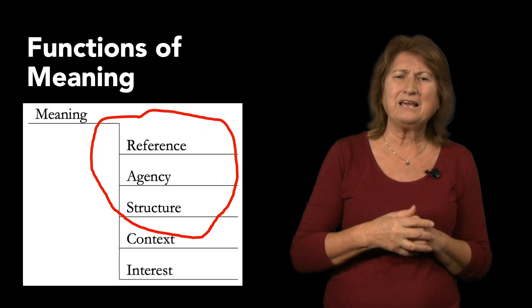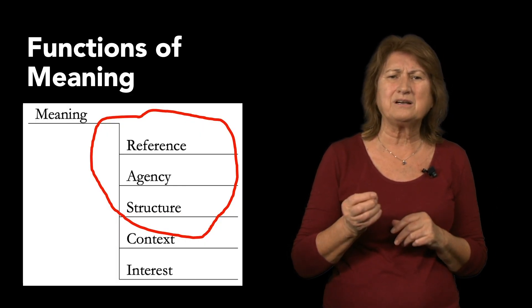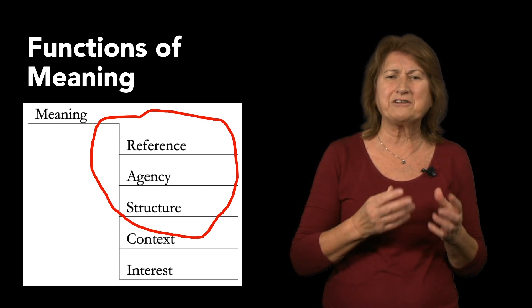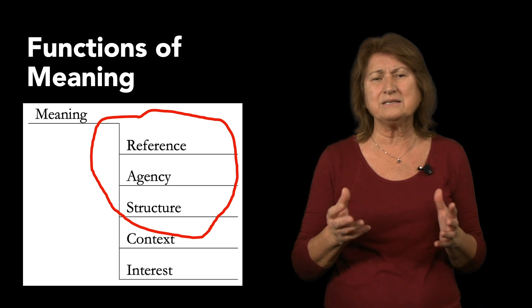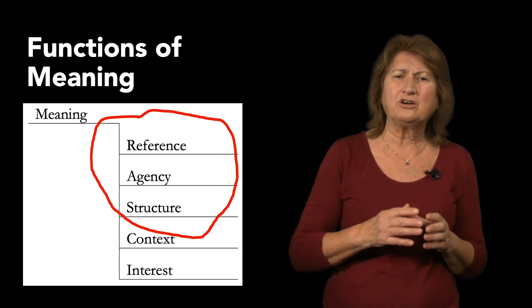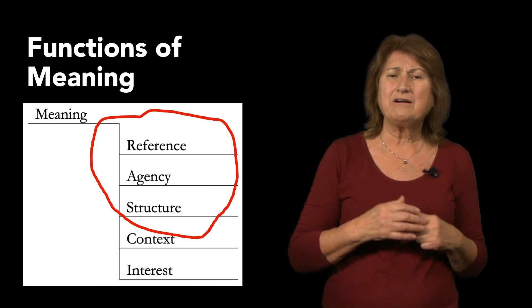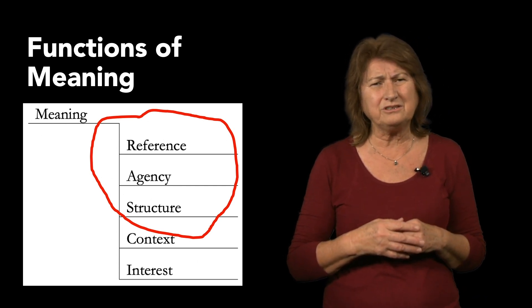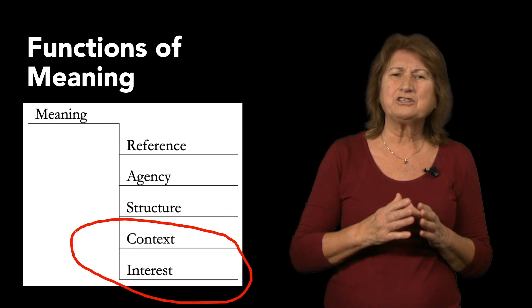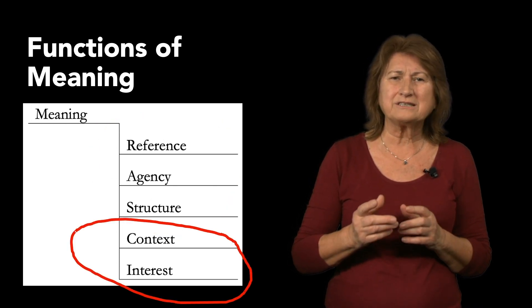By the way, Michael Halliday in his functional grammar focused on the first three of our functions, though he called them meta-functions rather than simply functions as we do. What we now call reference, he called ideational. Our agency, he called interpersonal, and our structure, he called textual.